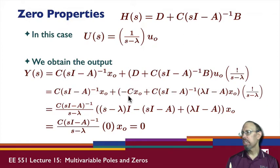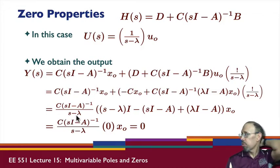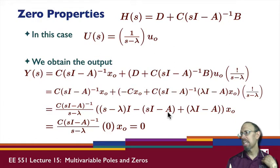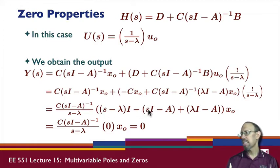Notice s minus lambda is going to come into this term here. When we factor out s minus lambda, I'm going to have s minus lambda*I coming here minus s. This term becomes minus s*I minus A. Then this term has the C*s*I minus A factored out with x0 on the right. The lambda minus lambda*I cancels with the positive lambda*I, the s*I cancels, and the minus minus A cancels with minus A. All of these terms cancel.